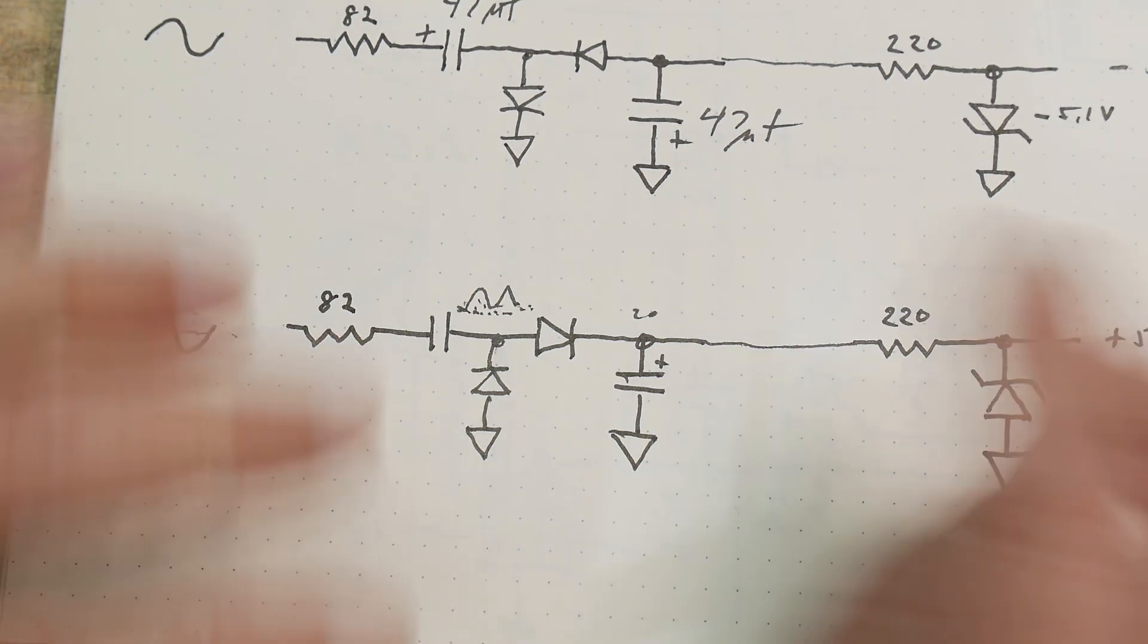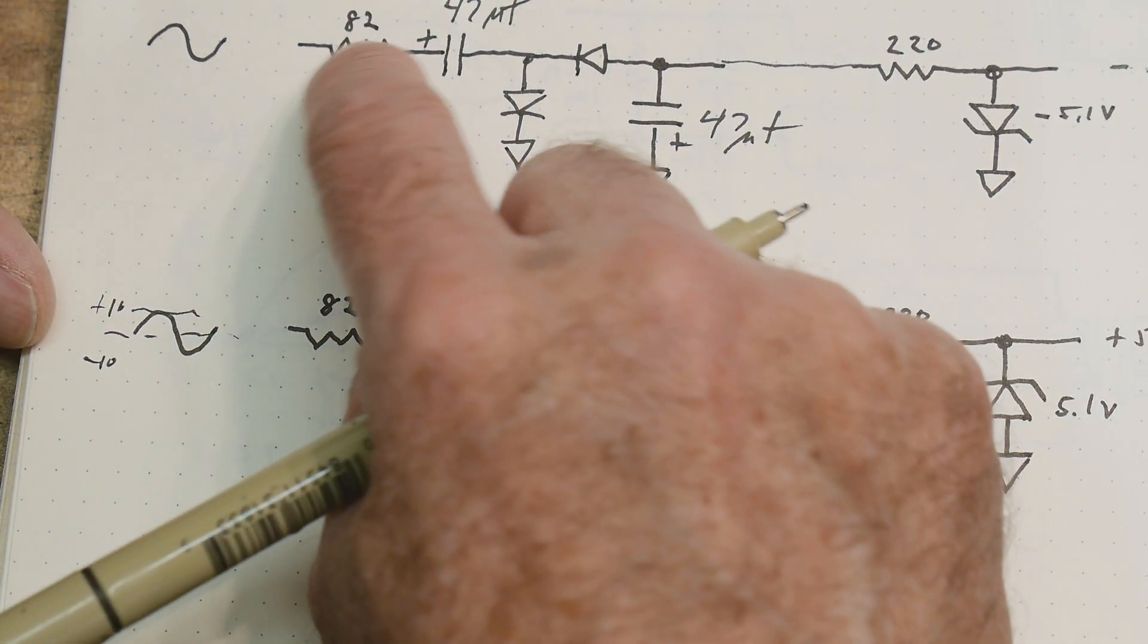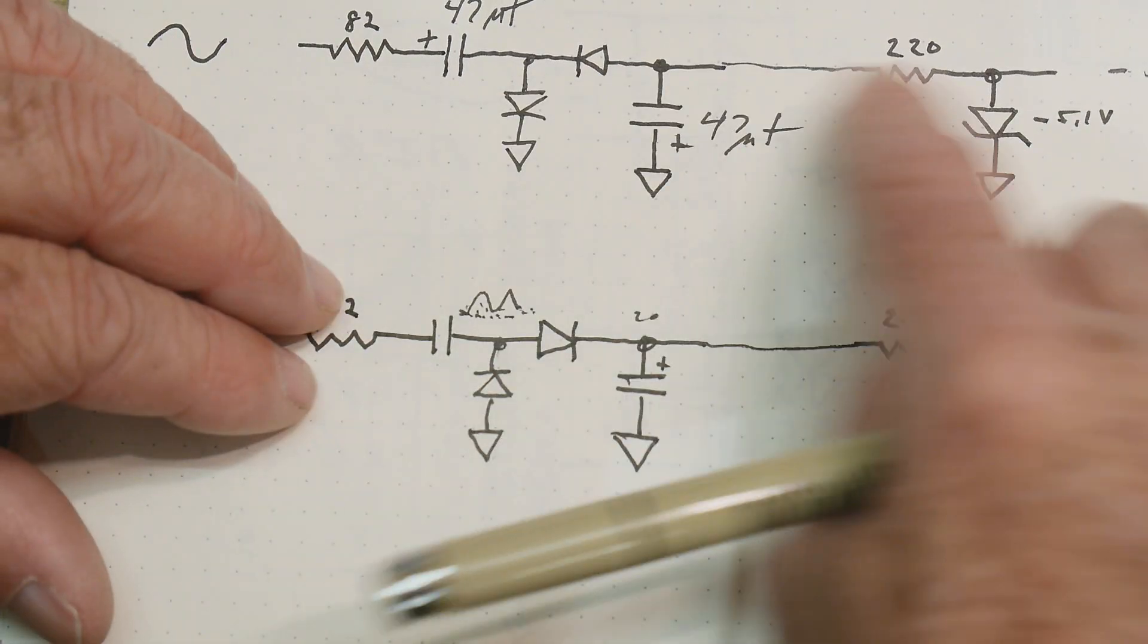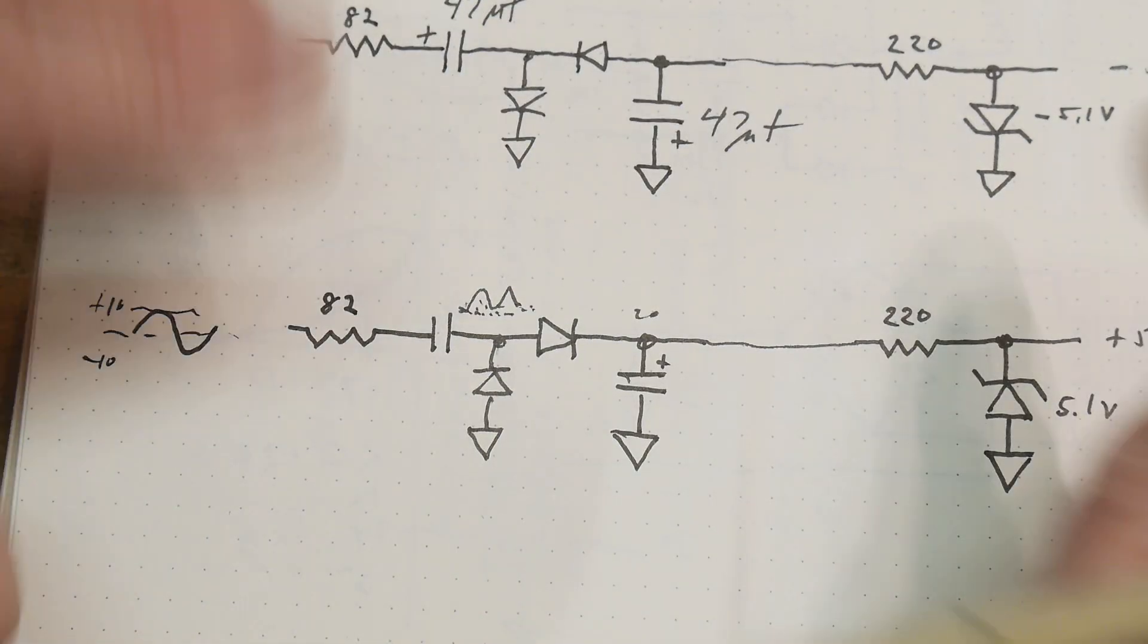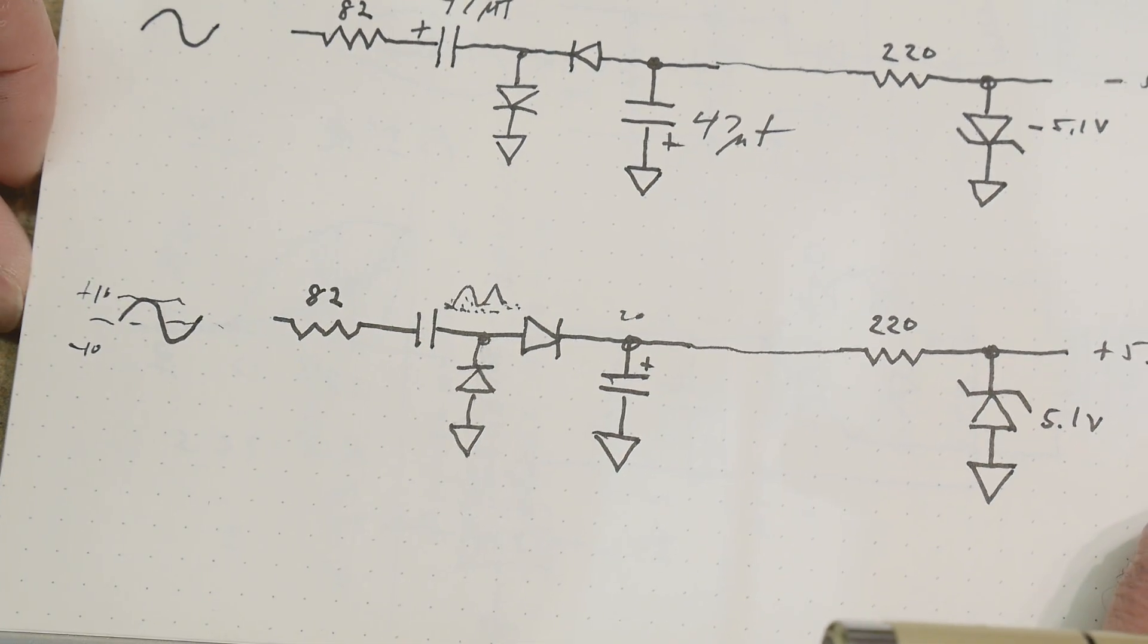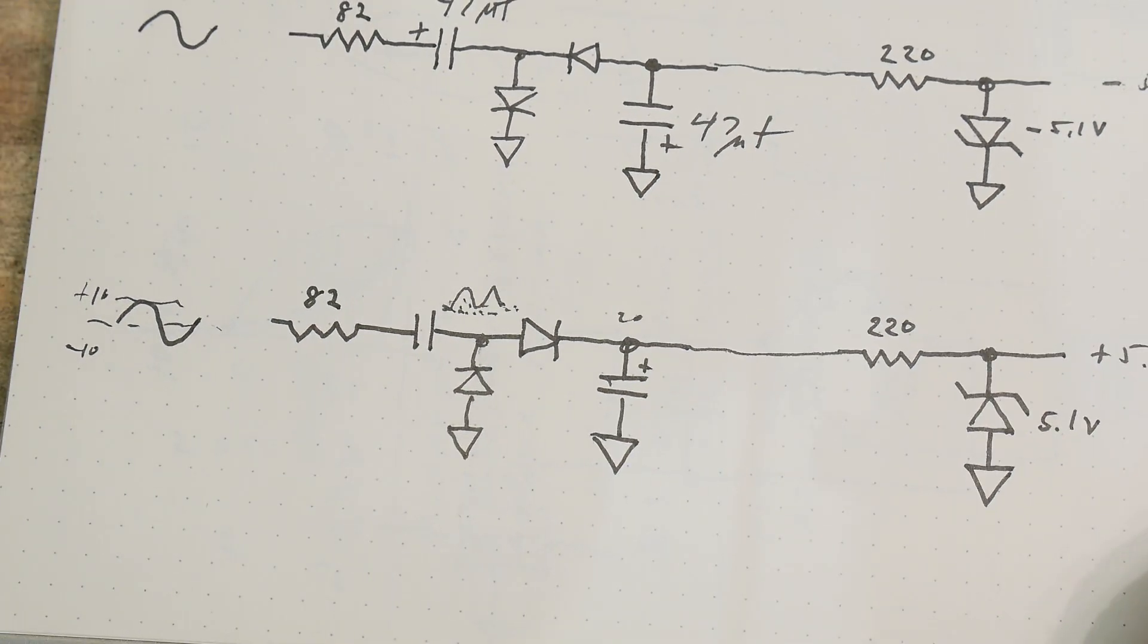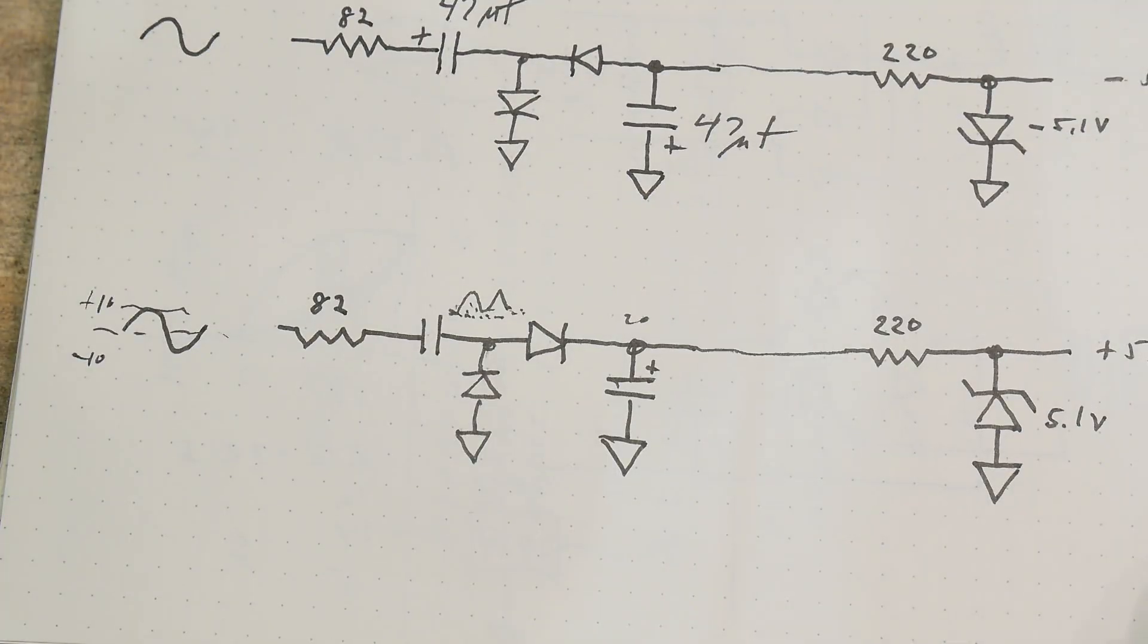So I'm sure they've chosen this value here and values here to make sure that they're getting enough current and they're getting their 5 volts that they need. So that's how the negative 5 volts is generated in the circuit.